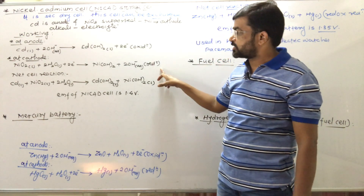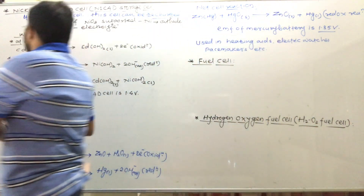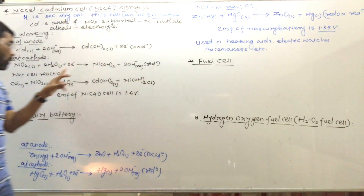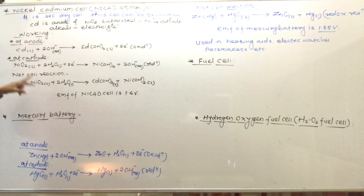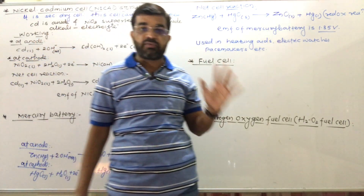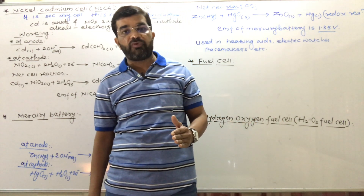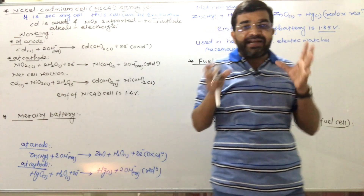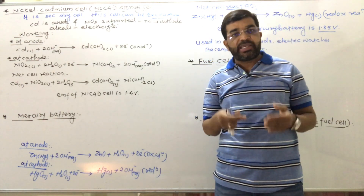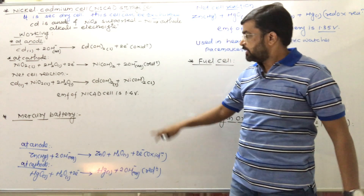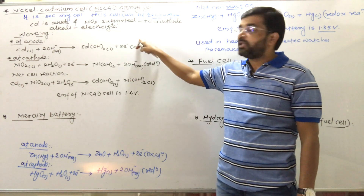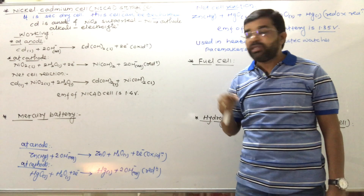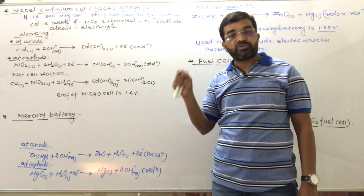In the net cell reaction, cadmium solid reacts and the hydroxyl ions cancel out. The net reaction is: Cd(s) + NiO₂ + 2H₂O → Cd(OH)₂ + Ni(OH)₂. The products — cadmium hydroxide and nickel hydroxide — are solid and adhere to the electrodes, so they are available for the reverse reaction. This confirms the cell is reversible. The anode undergoes oxidation and the cathode (NiO₂) undergoes reduction.